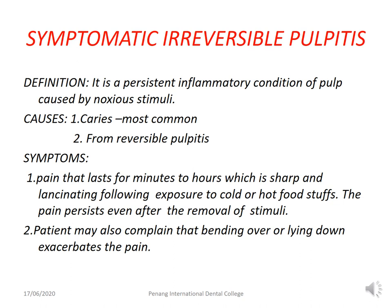The second condition is symptomatic irreversible pulpitis, defined as a persistent inflammatory condition of the pulp caused by noxious stimuli. The most common cause is caries, with the same other causes as reversible pulpitis. Symptoms include pain lasting from minutes to hours, which is sharp and lancinating following exposure to cold or hot foods or drinks. The key difference from reversible pulpitis is that the pain persists even after removal of the stimulus. The patient may also complain that bending over or lying down exaggerates the pain.